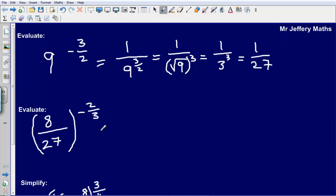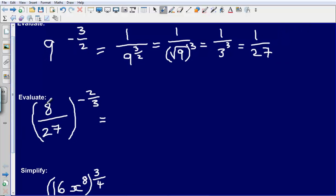Let's take a look at this example. So we are asked to evaluate 8 over 27 raised to the power of negative 2 thirds. So to begin with, because again we have this negative power, we take the reciprocal of our value. So the reciprocal of 8 over 27 would be 27 over 8.